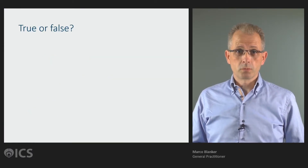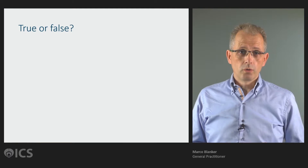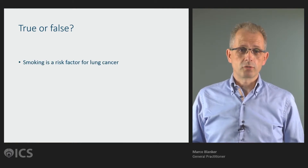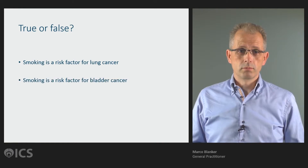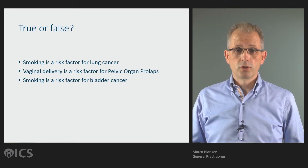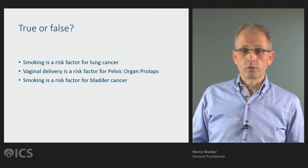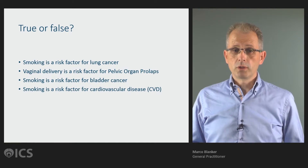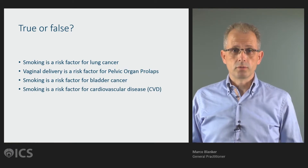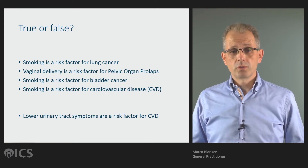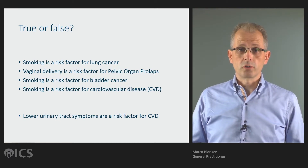First I will give some statements. Do you think they are true or false? Smoking is a risk factor for lung cancer. Smoking is a risk factor for bladder cancer. Vaginal delivery is a risk factor for pelvic organ prolapse. Smoking is a risk factor for cardiovascular disease. Lower urinary tract symptoms are a risk factor for cardiovascular disease.